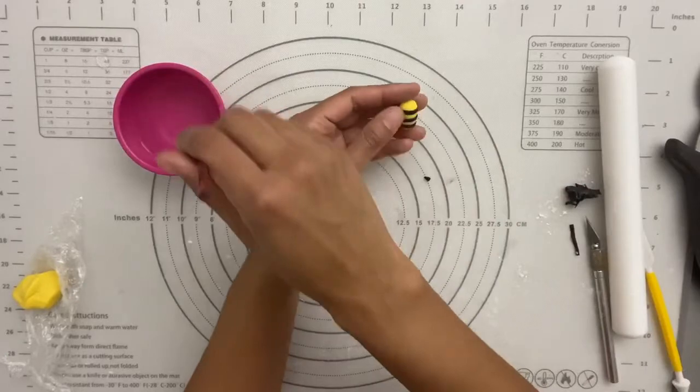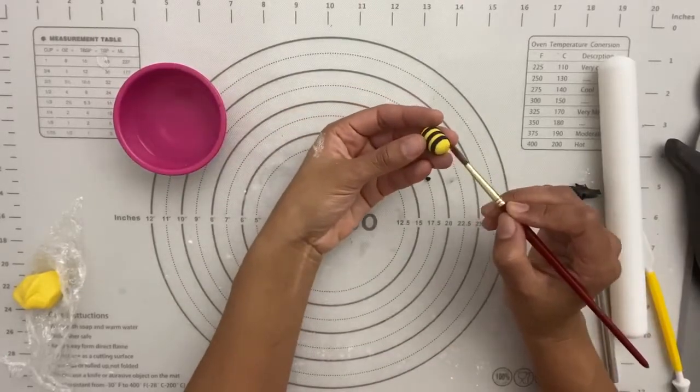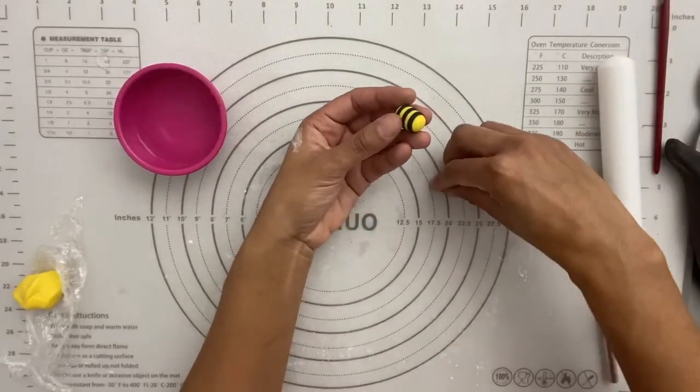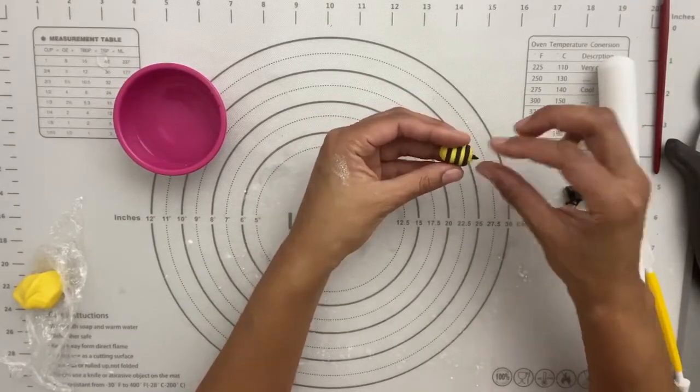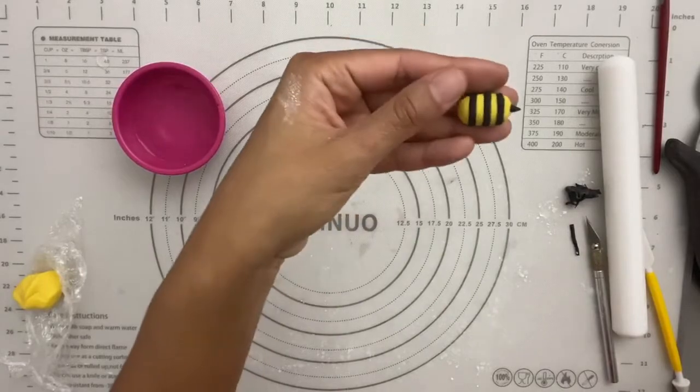Take your bee. Decide which one you want to be its bottom, which one you want to be its face. Add a little water. Stick on the little stinger. You don't have to have a stinger. It's kind of cute.